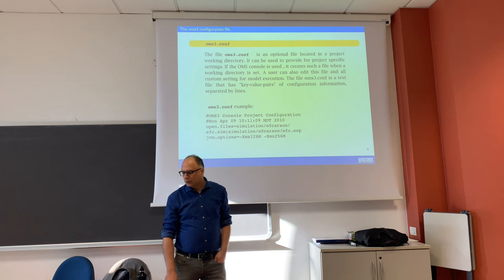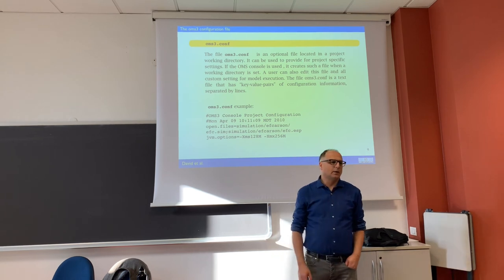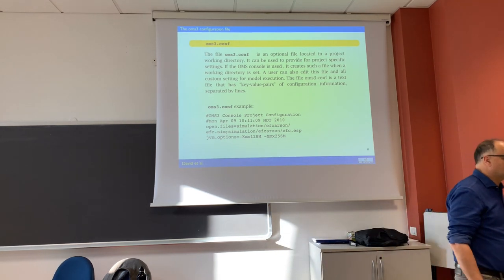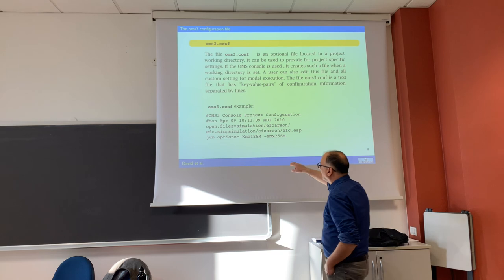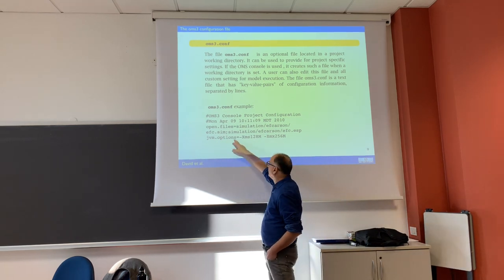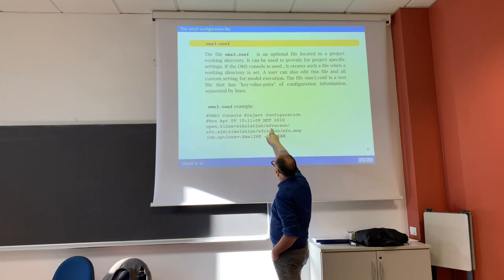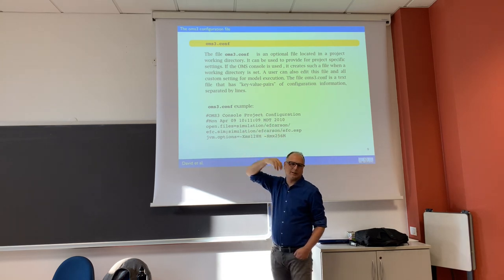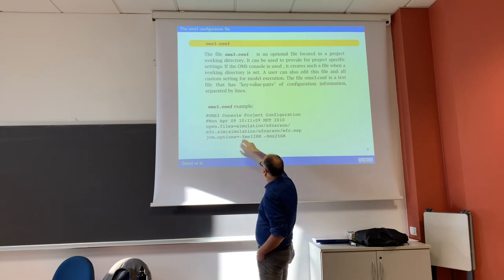There is a file that is good for you to know exists: oms3.conf. It is an optional file located in the directory. It contains some particular options — for instance, for the JVM, including memory management settings, which are quite small here. You can also specify variations for where your input files are located. I told you that 'simulation' is a standard name, but it's not mandatory to have that name — you put your changes here.